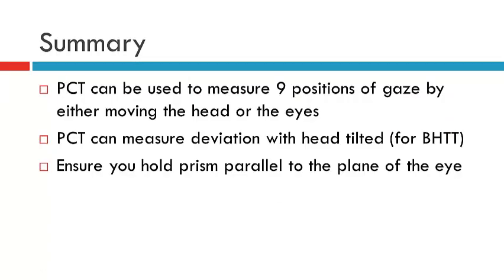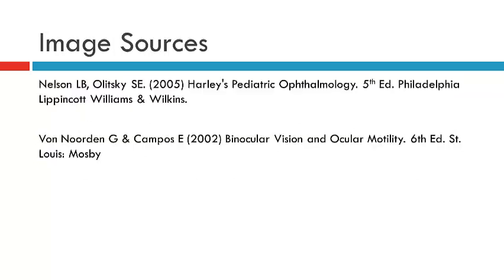In summary, the PCT can be used in nine positions of gaze by either moving the head or the eyes. Remember that you can also utilize the prism cover test with the head tilted. Very importantly, remember to hold the prism parallel to the plane of the eye. Otherwise, the technique of performing the PCT is exactly that which you have learned previously in concomitant strabismus. Thank you — that brings us to the conclusion of this video.